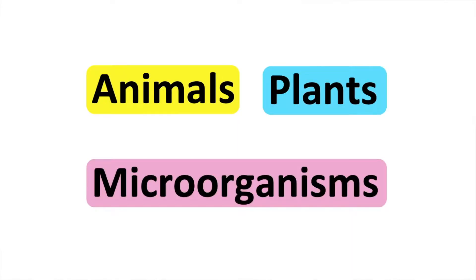All living things can be put into three main groups: animals, plants, and microorganisms. They have different key features that help us to differentiate between them.